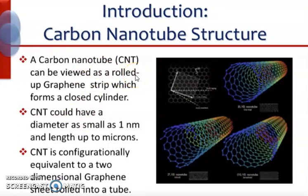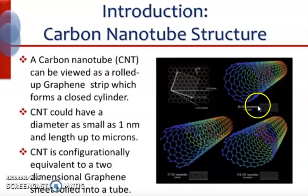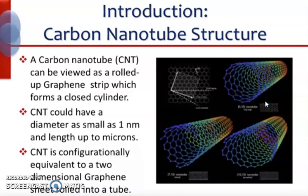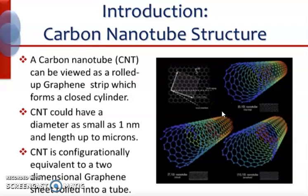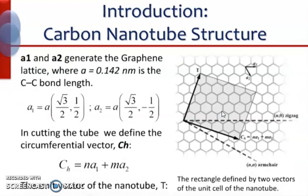Carbon nanotubes can be single-walled, namely one rolled-up graphene sheet, or multi-walled, namely several rolled-up graphene sheets. The properties of carbon nanotubes have caused researchers and many companies to consider using them in many fields of application, including sensing applications, which we will focus on in the current class.